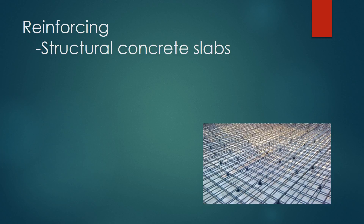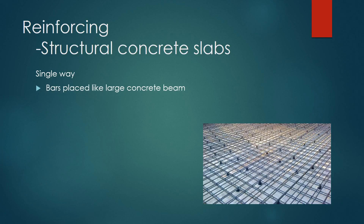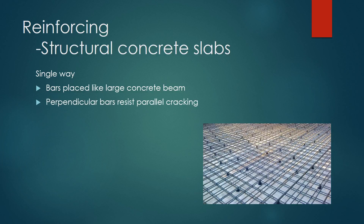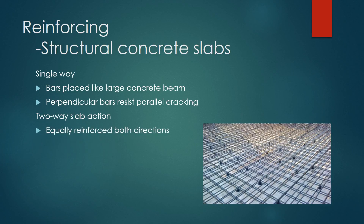Reinforcing is also used in structural concrete slabs. Reinforcement in a one-way concrete slab is similar to a large concrete beam, with added bars perpendicular to prevent parallel cracking. In two-way slab action, there is reinforcement placed equally in both directions. Two-way slab actions are relatively square and more cost effective.